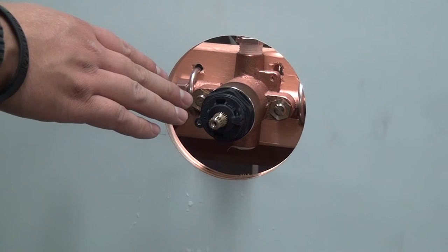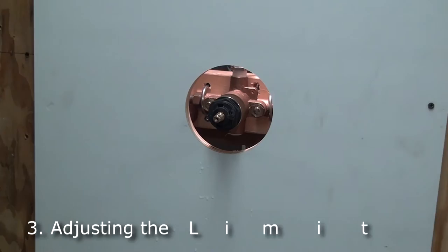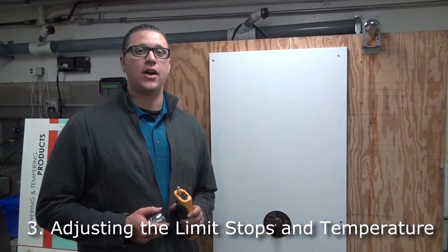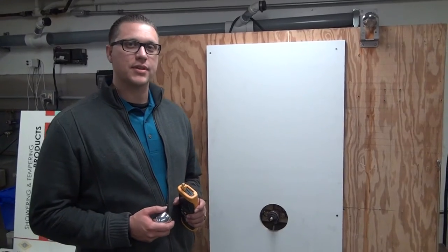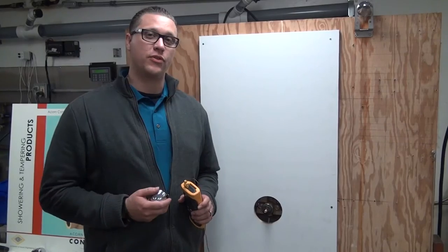Now that the cartridge assembly is in place, we're ready to set our limit stops. We'll be setting the off and high temperature stops. For this portion of the installation, you will need a temperature measuring device and a handle control.